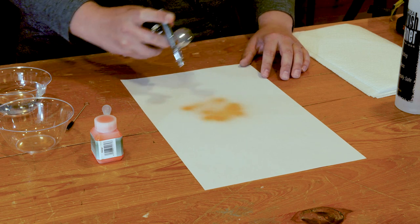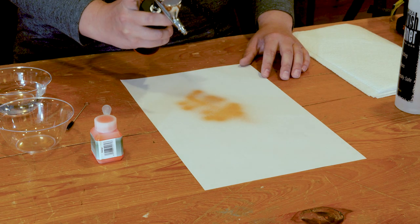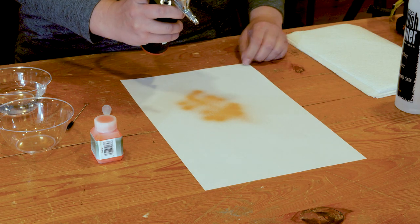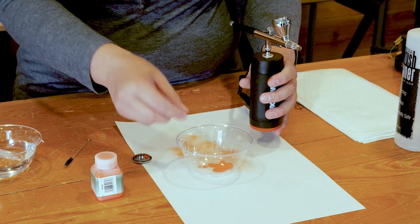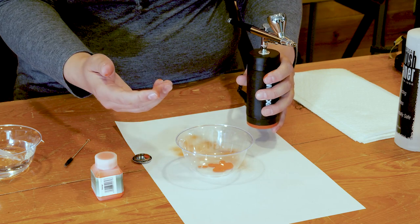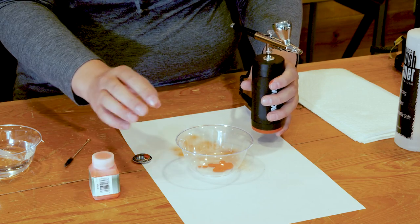There we go. Now I've finished here so I'm going to power my tool off. So for quick cleaning you're going to remove the lid, pour out any excess paint. You can either pour it into a cup, a trash can, or you can pour it back into your paint bottle.